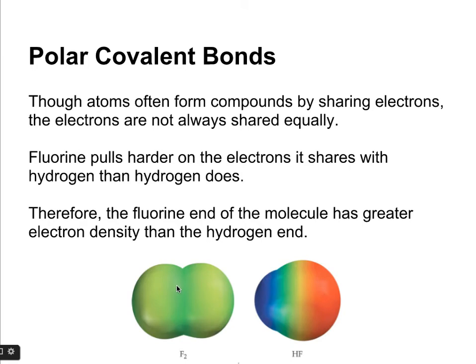So if we look at the picture, if we've got two fluorine atoms, they're going to have an equal electron density because they're both exerting the same amount of force on the electrons. If we look at HF though, there's a greater electron density around fluorine than hydrogen because fluorine is exerting a greater force on those electrons. So they're going to be more attracted to the fluorine end of the molecule than the hydrogen.